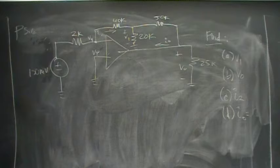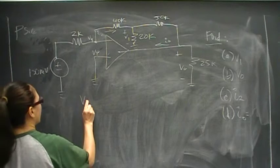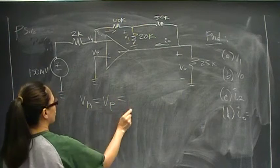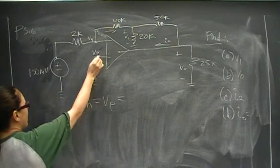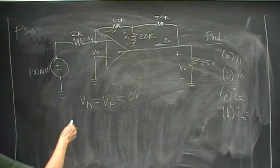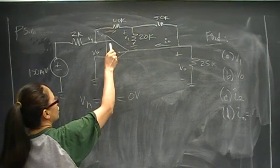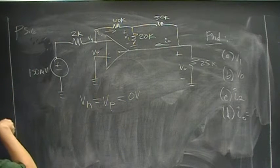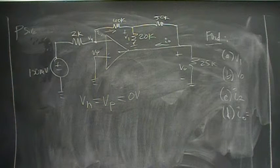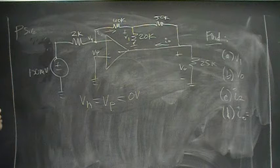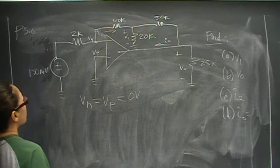So we know that the op-amp is ideal, which means that voltage at the negative terminal is equal to voltage at the positive terminal. And voltage at the positive terminal is grounded, so we know that Vn is zero volts. There is no current going into the negative or the positive terminals. So when we do our node voltage equations, we can ignore the current in that branch. There's high enough internal resistance so that current can't get in.